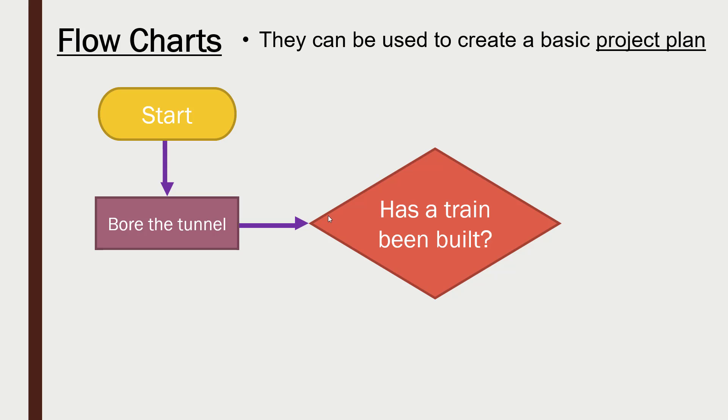Now we might have a decision. Always a question goes inside a decision symbol. And the question here is has the train been built? And this decision in a flowchart should always be a yes/no or a true/false answer. So it should only be one of two options. Based on LO3, we'd call this a Boolean choice. So yes or no, true or false.